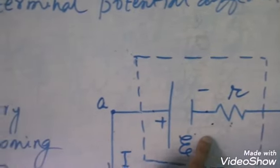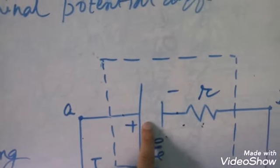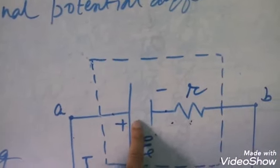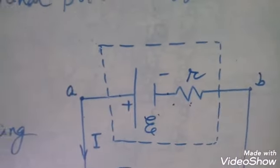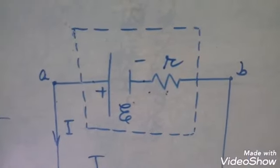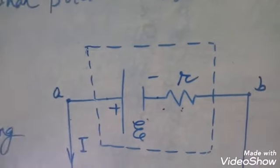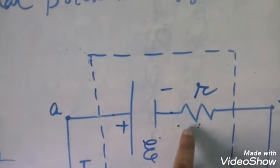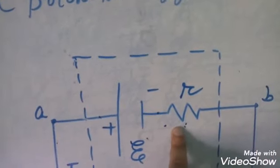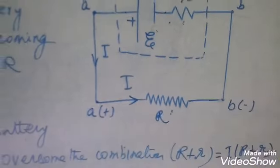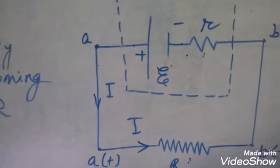As the charge particles move from lower potential energy level to higher potential energy level through the battery or through the electrolyte solution, the charge particles collide with the electrolyte ions. This means the electrolyte solution offers resistance to the flow of electric current. This resistance is called the internal resistance of the battery, denoted by the symbol small r.